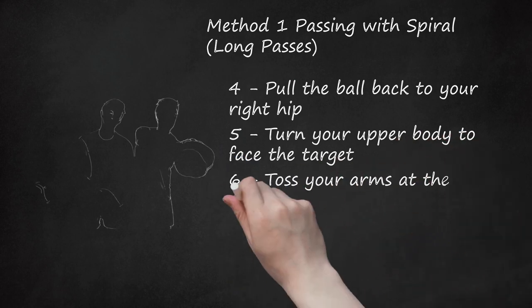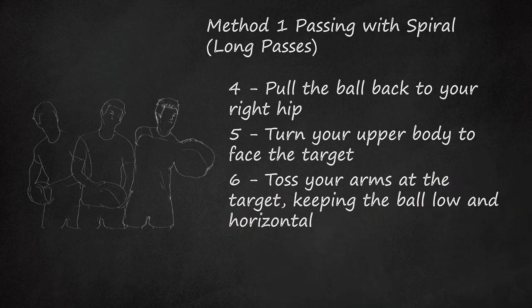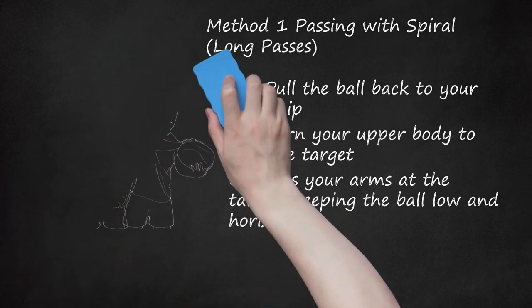Toss your arms at the target, keeping the ball low and horizontal. Keep the ball at roughly the same level, roughly hip, belly height, throughout the throwing motion. Your right arm will give most of the power, so focus on pushing from the right on a right-handed throw. Use your left hand to guide the throw to its target. Your inside arm will stay relatively in place, elbow slightly bent. Your outside arm should curve a bit outside, with the elbow pointing out.